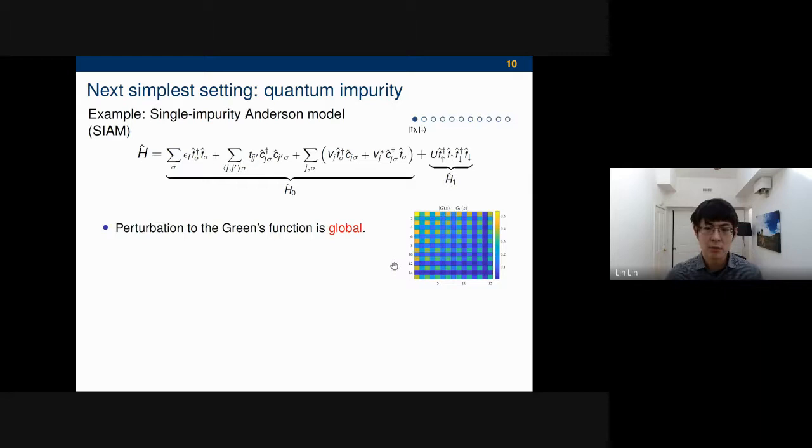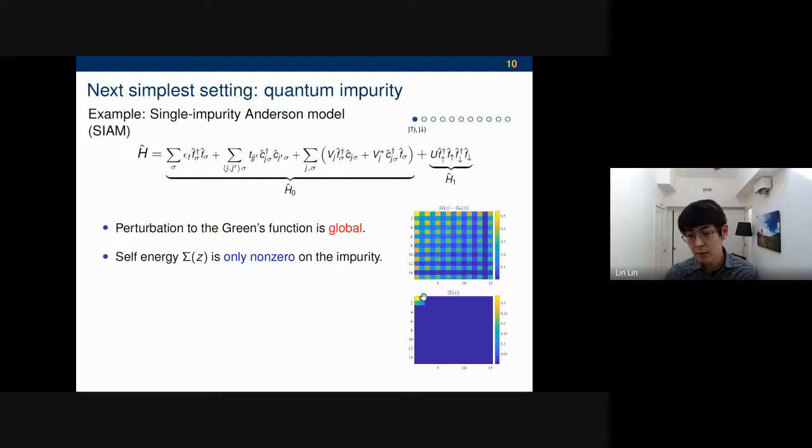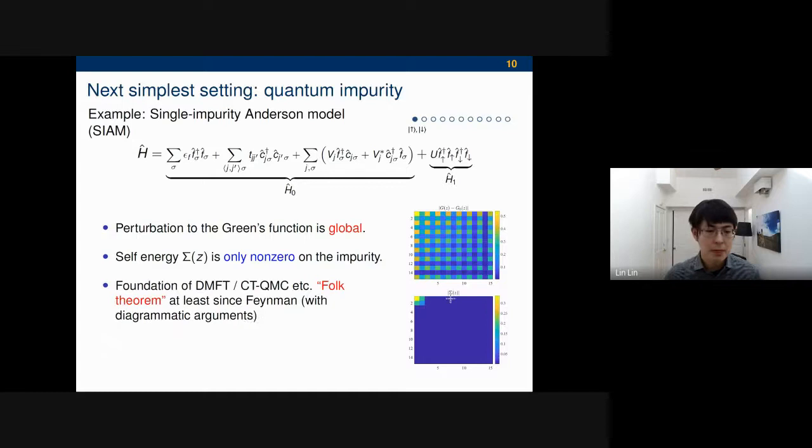But remember, the sigma is defined to be the difference of the inverse. Then the difference is completely localized around the impurity. So that is one of the reasons why you want to look at this sigma. This fact is really the foundation of many methods, especially those based on the Green's functions, such as dynamical mean field theory, QMC. As far as I've been talking to physicists, has been a folk theorem, at least since Feynman, and can be easily motivated from diagrammatic arguments. As a matter of fact, this fact is in every code, so there's no way you can get around that.